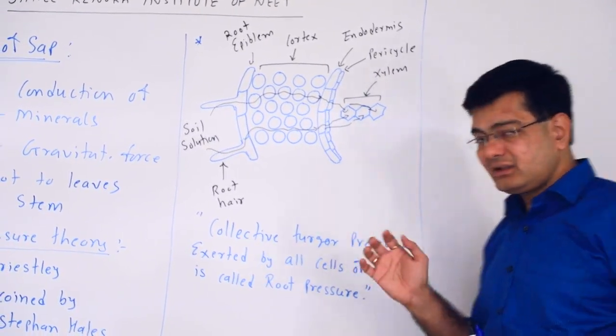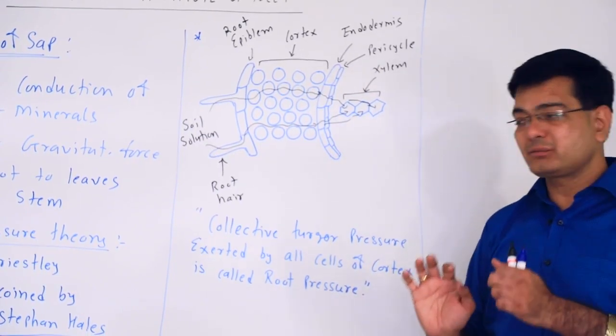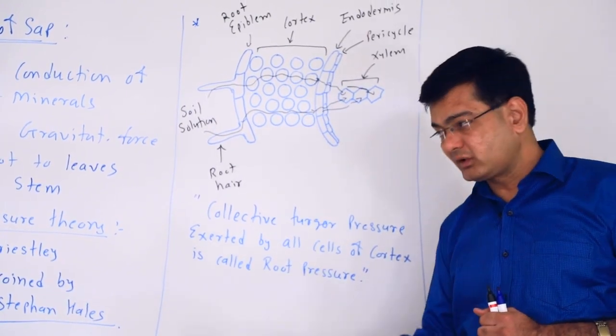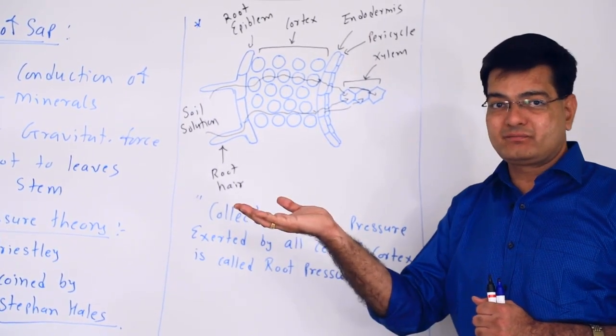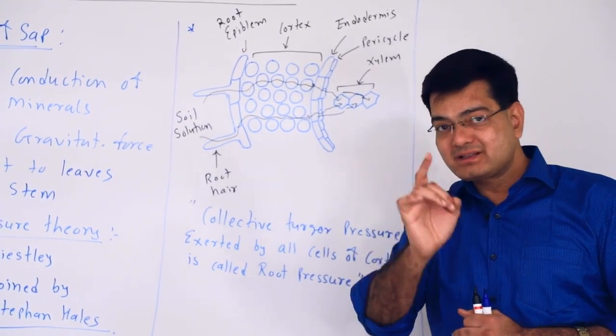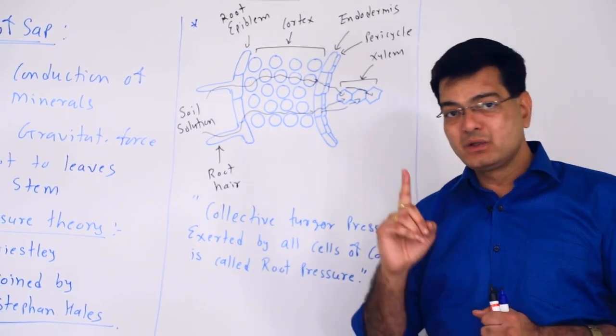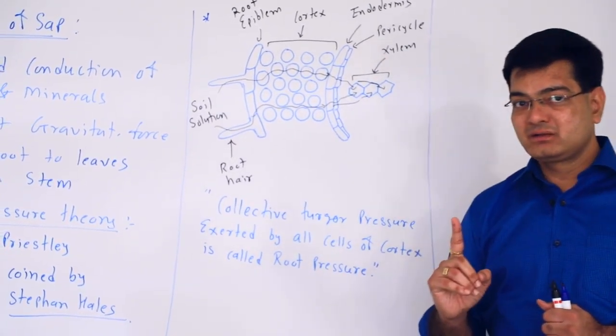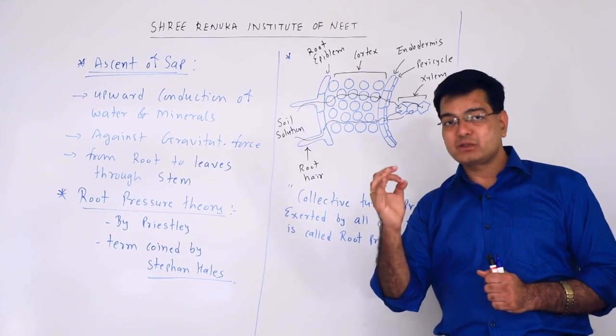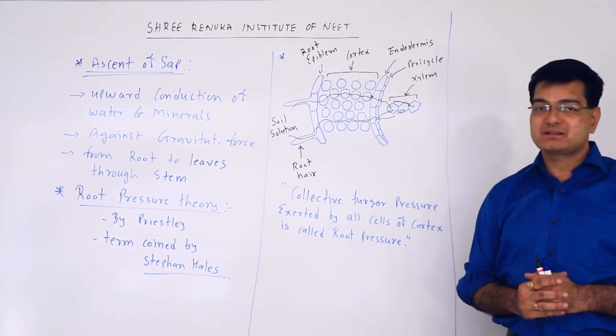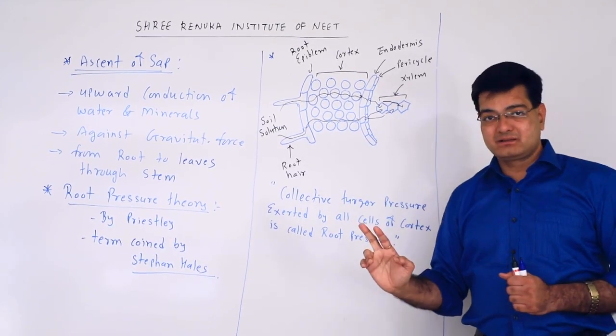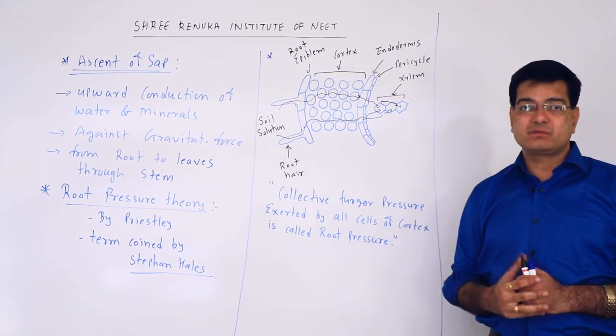When water enters into the xylem vessel, the water molecules exert pressure on the xylem vessel or tracheids. The water moves upward, and due to this pressure exerted by water molecules, water moves upward, and this is ascent of sap. Root pressure is hydrostatic pressure, a positive pressure exerted by the cells initially on the endodermis and later on the xylem vessel. Due to this pressure, upward conduction of water is carried out.